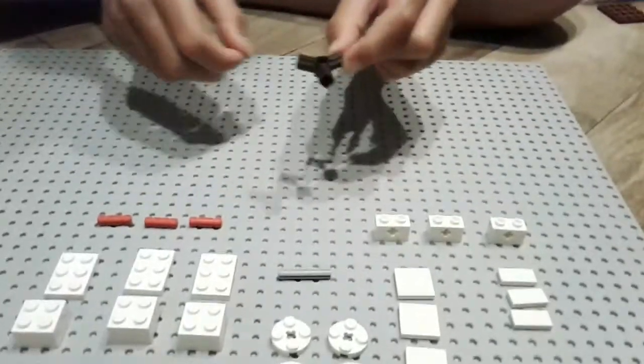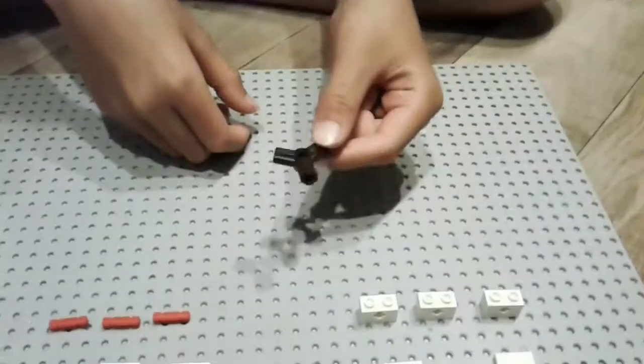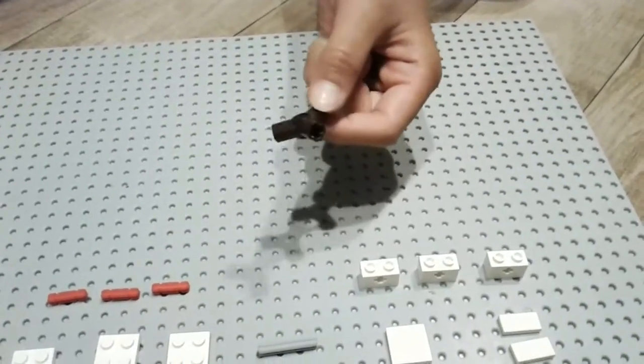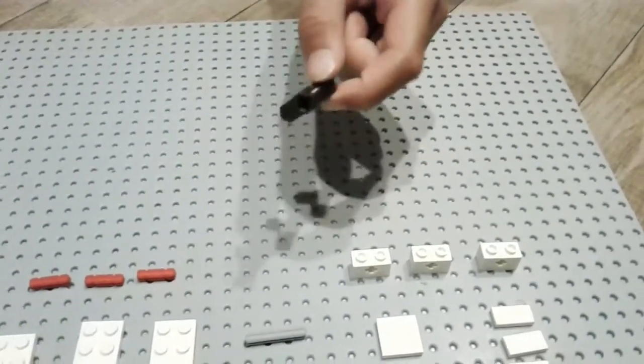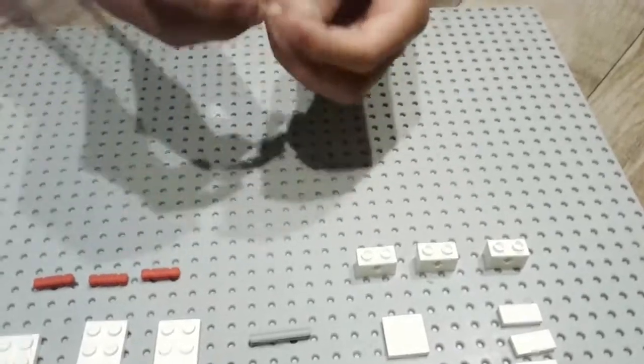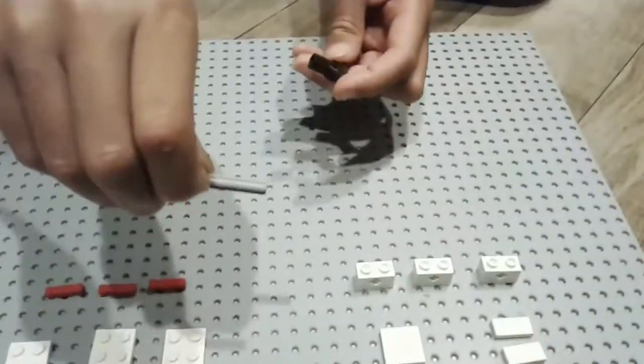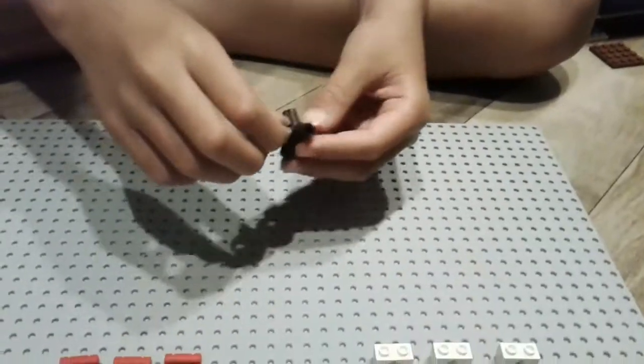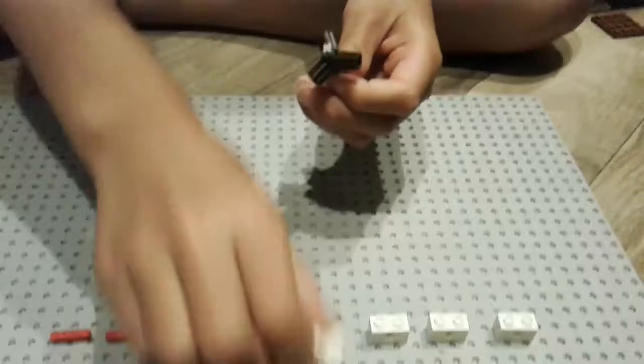First, get this piece. It's a technique piece. It has three axle connectors and a hole in the middle, like this. Then get a three-long axle and just stick it there like that, and then get a two by two round plate.